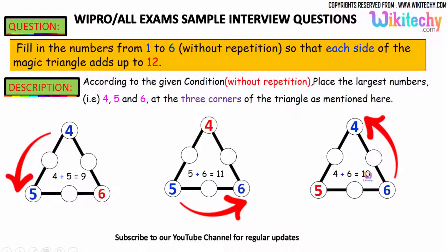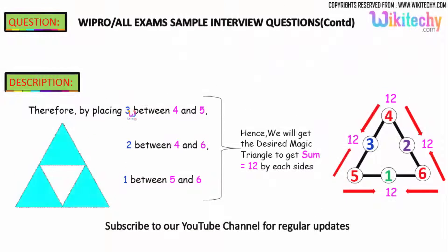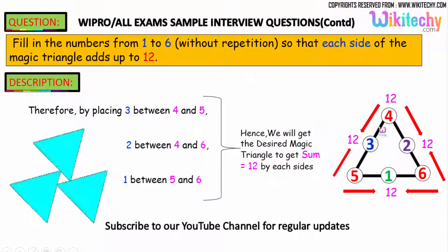In turn, to get 12, put 2 here. To get 12, put 1 here. To get 12, put 3 here. Obviously, the answer is placing 3 between 4 and 5, you got 12. Placing 2 between 4 and 6, you got 12. Placing 1 between 5 and 6, you got 12.